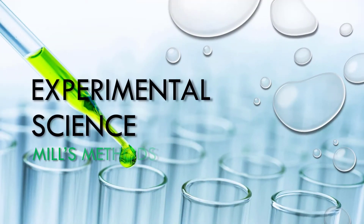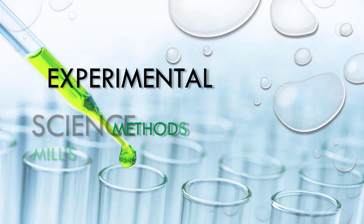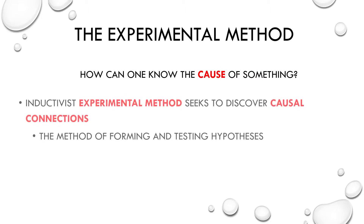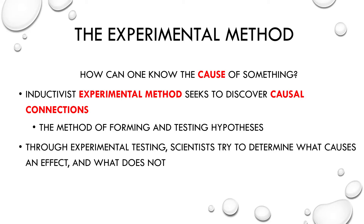Experimental science is distinct from historical science in that it deals with observable present events, and experimentation is necessarily observable and present. So when it comes to the identification of causes, experimentation has proven incredibly useful and has advanced science further in the last 500 years than in all of the preceding millennia. But how exactly can we come to know the cause of some effect? The inductivist experimental method, which is the method of forming and testing hypotheses, seeks to discover causal connections. Through experimental testing, scientists try to determine what causes an effect and what does not.